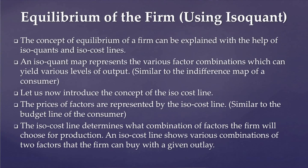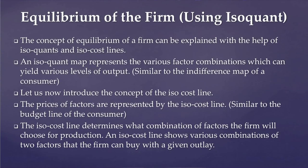The concept of equilibrium of a firm can be explained with the help of isoquants and isocost lines. In our other units on markets, we have already discussed these with the help of total revenue and total cost curves. An isoquant map represents the various factor combinations which can yield various levels of output. Please note that this is similar to the concept of the indifference map of a consumer we have already come across.